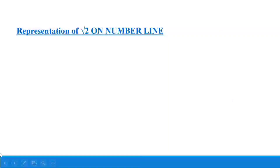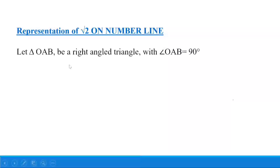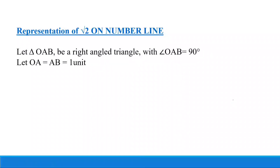Let us see how much is the length of root 2. Let us suppose that OAB is the right triangle, right angled at A, such that angle OAB is equal to 90 degrees, and I take the length of the two sides that are right angled to each other to be one unit. So I take OA is equal to AB is equal to one unit.